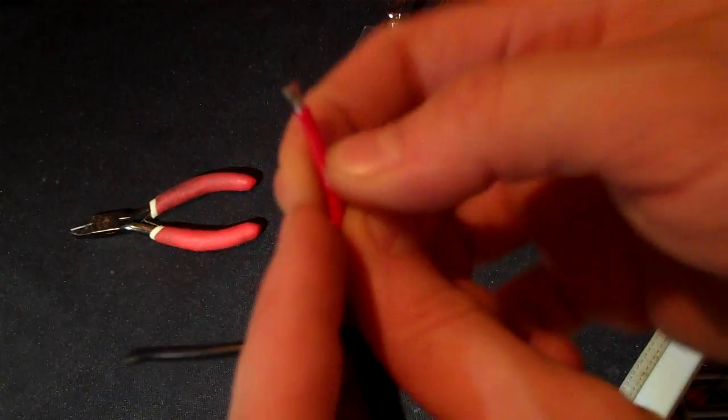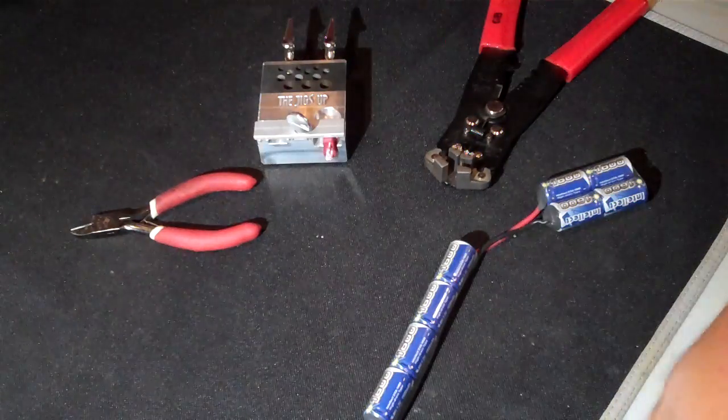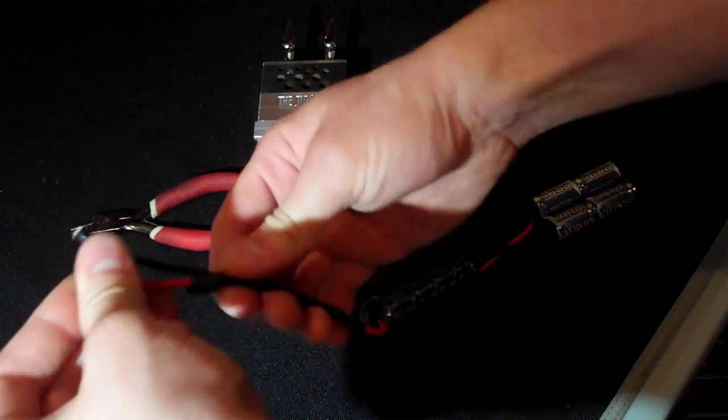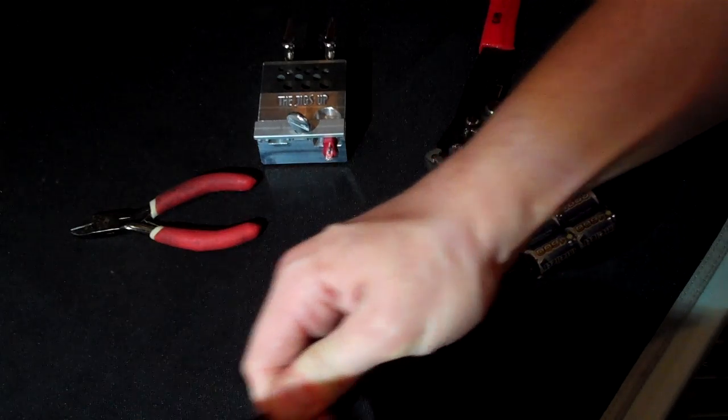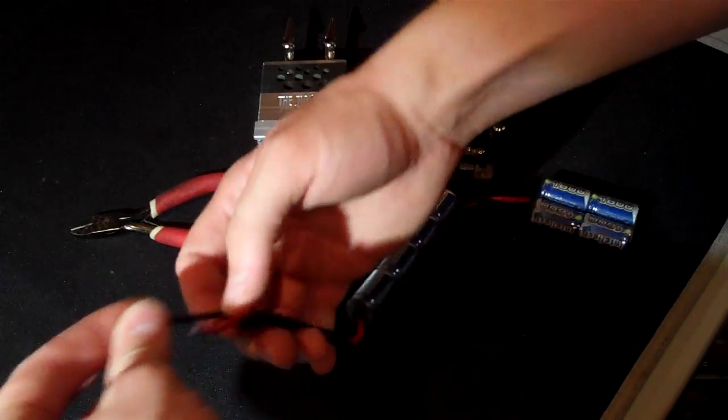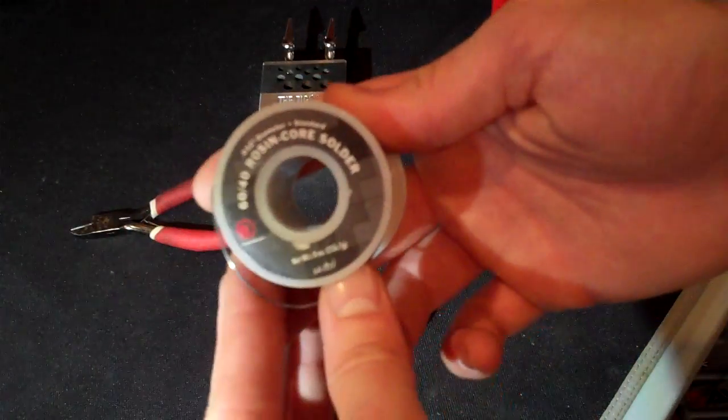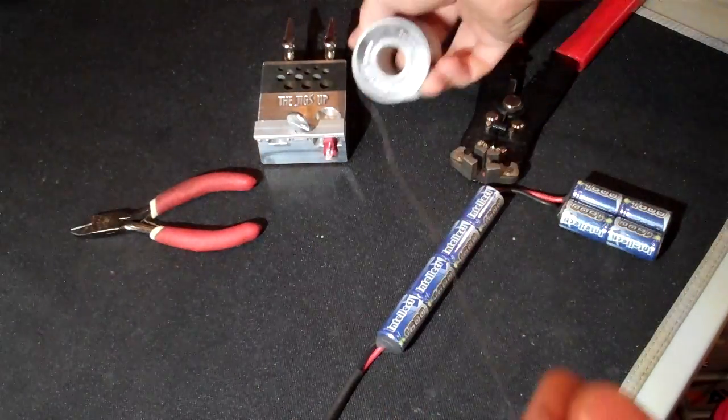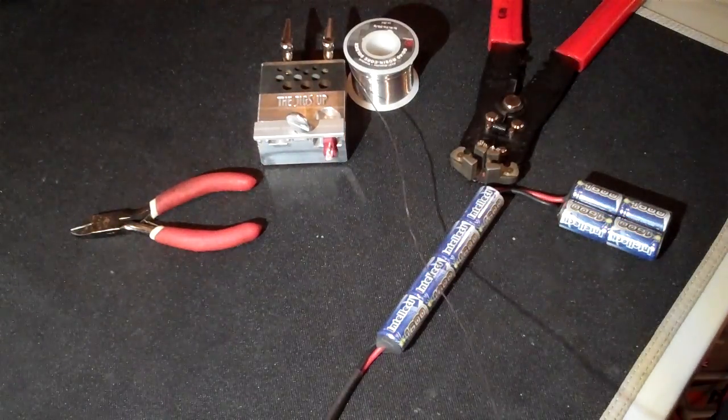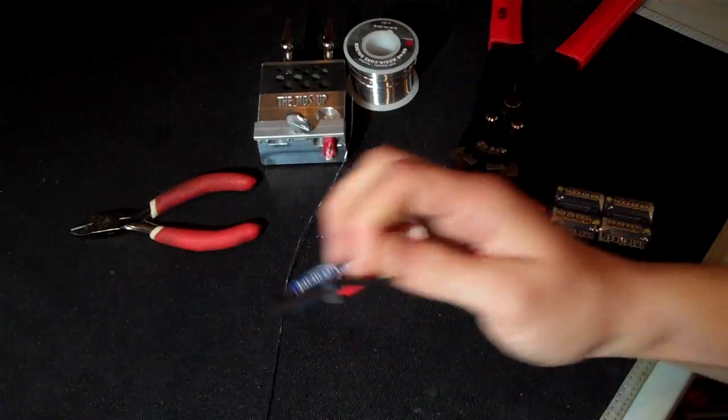So we'll do the positive first. Always remember to slide the heat shrink tubing down. Don't forget about that, it's next to impossible to put on afterwards once you solder it. So we'll do that. Grab our soldering. I like Radio Shack solder. You know there's many different brands, I have some Novak silver solder, but personally I like Radio Shack. It works really well, has the flux built in.